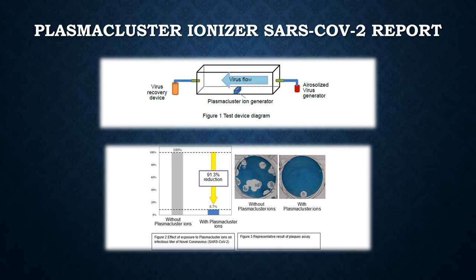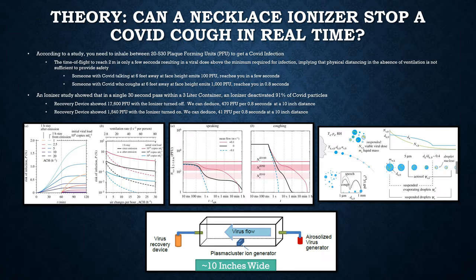In a plasma cluster ionizer SARS-CoV-2 study, virus particles were shot into a small container for 30 seconds and the remaining particles were collected. The virus was reduced by 91%, confirming ionizers can stop virus particles in real time. A COVID cough study found infection requires inhaling 20 to 530 plaque-forming units; talking at face height emits about 100, and a COVID cough emits 1,000. Another ionizer study showed 30 seconds eliminated thousands of plaque-forming units, suggesting it could stop a COVID cough in real time.